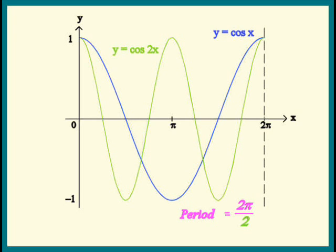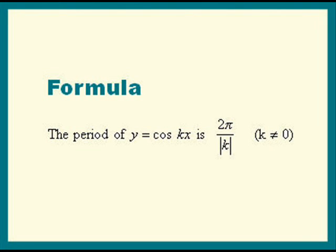In fact, there is a formula to do this. It says, if k is a non-zero constant, the period of cosine kx or sine kx equals 2 pi divided by the absolute value of k.